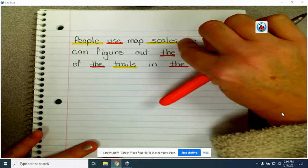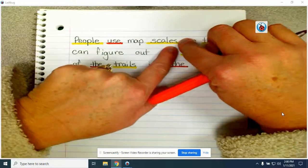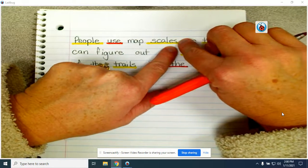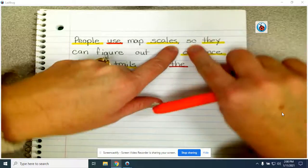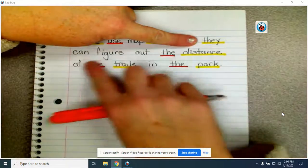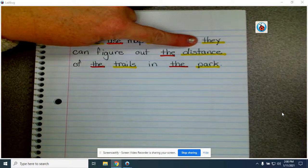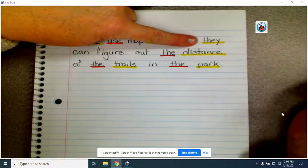This sentence is different than any sentence we've looked at. If we put a period at the end of scales, we could say, people use map scales. That's a sentence by itself. It's a complete thought. If we started with they, we could have another complete thought. They can figure out the distance of the trails in the park. So that could be another sentence.